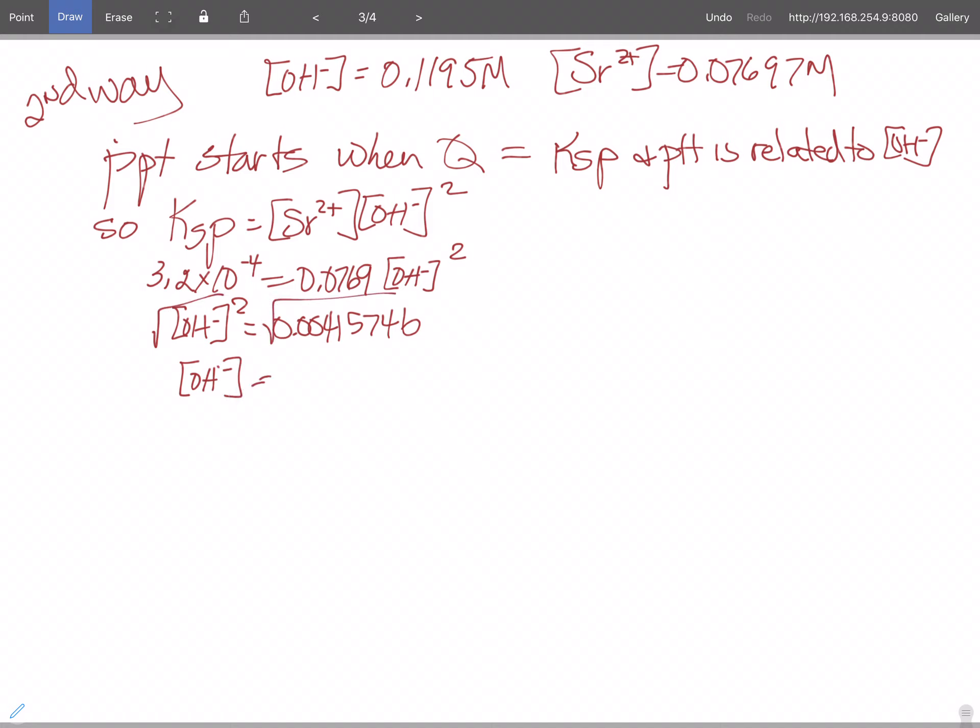And that gives us 0.06448 molar, and that's when the precipitation starts. So if we then find the pOH of that, pOH equals 1.19. So pH is equal to 12.81.